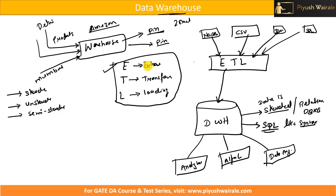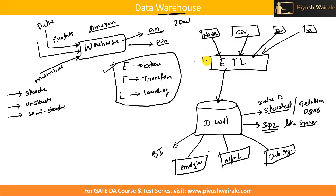To summarize the architecture: we have different types of input, then an ETL process, then we store the data into a data warehouse which stores structured data and supports SQL-like syntax. We can then use that data for various purposes — analytical purposes, AI/ML models, data engineering, or business analytics tools like Power BI and Tableau. The ETL process is the main important component of this architecture.